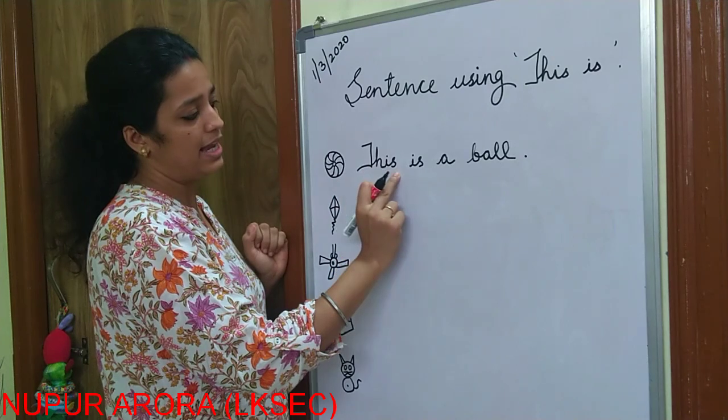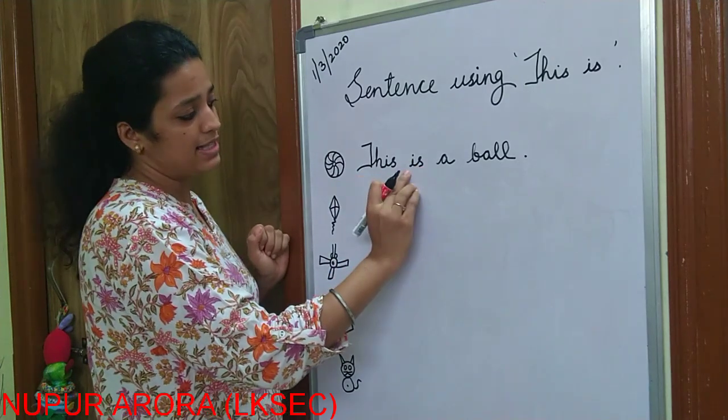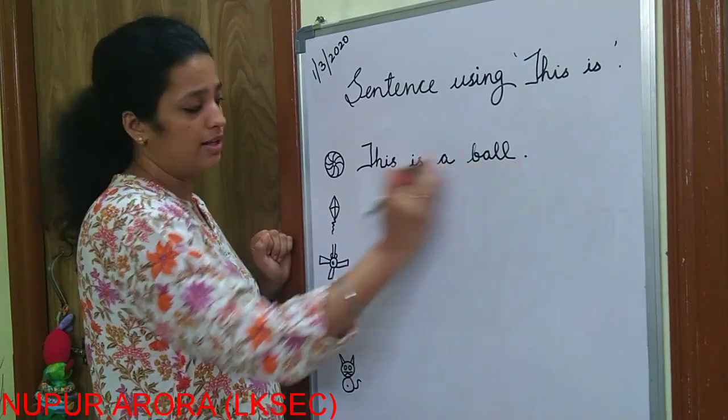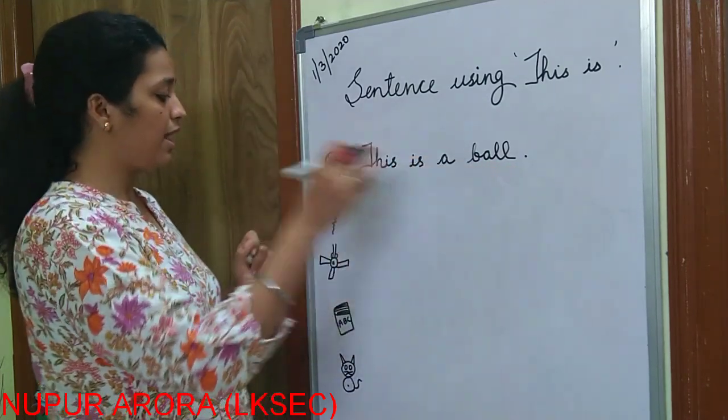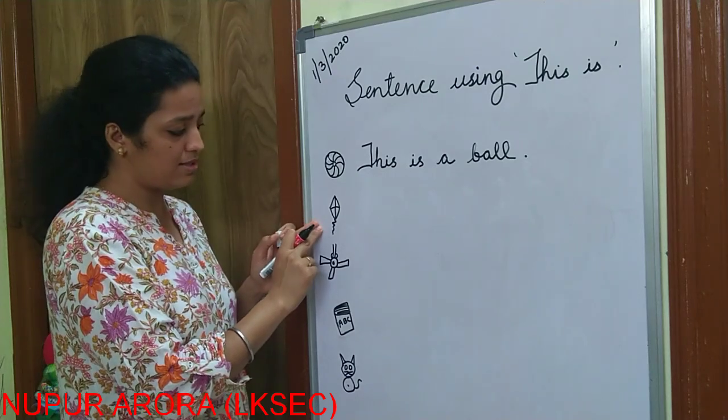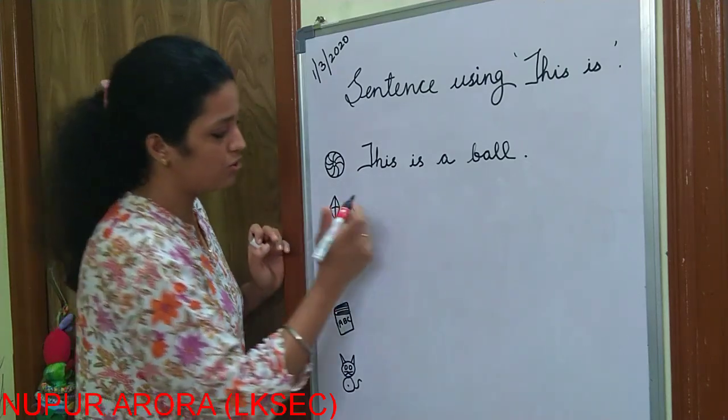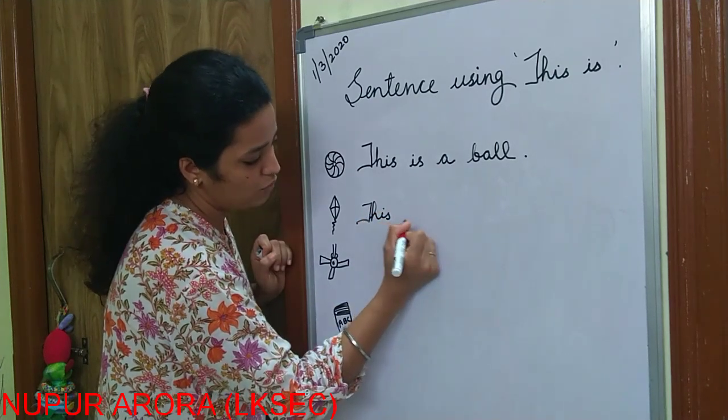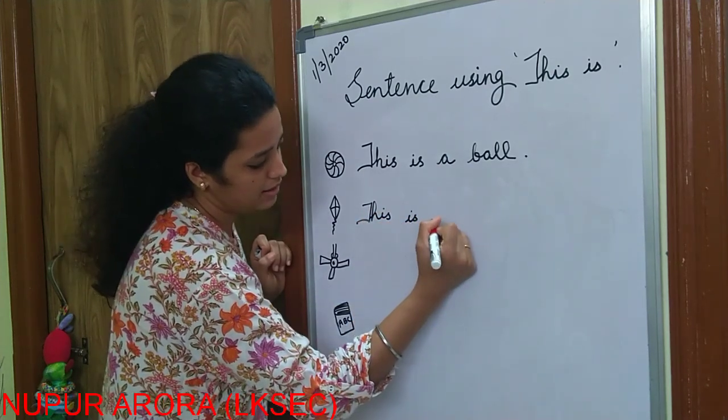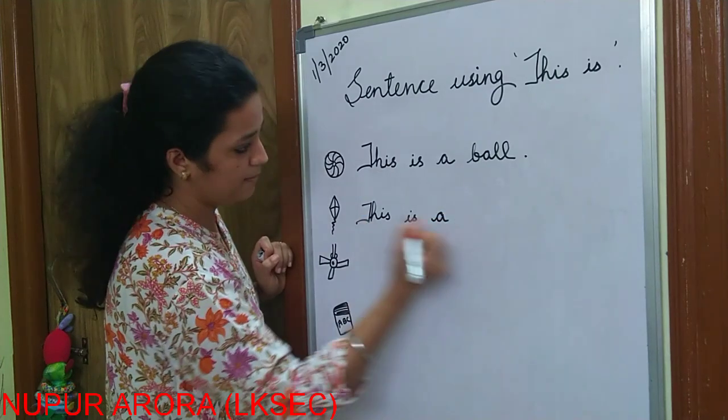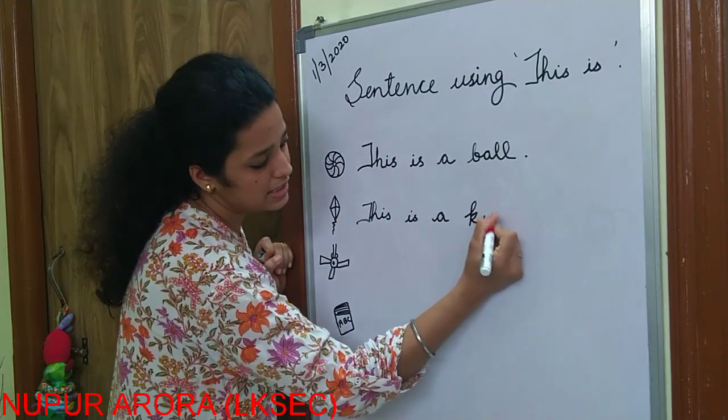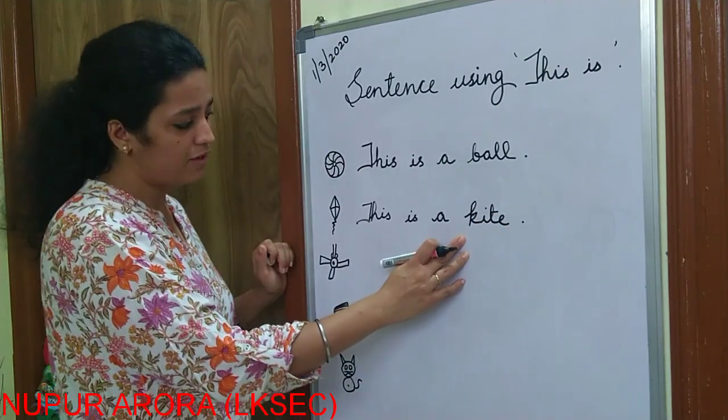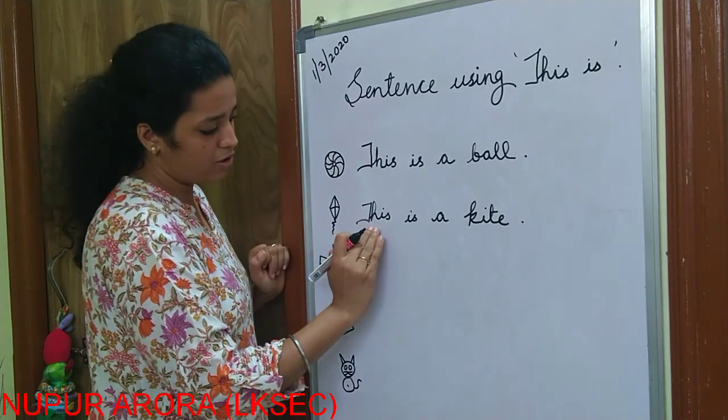Read it again, T-H-I-S this, I-S is, A, B-A-L-L ball, this is a ball. Again write, see what is the name of kite. So what you will write here is T-H-I-S this, again two finger gap, is A, what is this K-I-T-E kite. You know the spelling of kite.